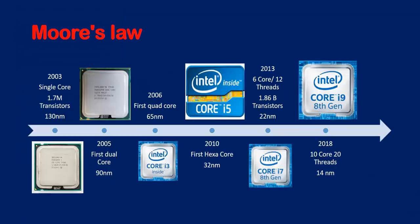If you look at the evolution of processors from 2003 to the current year: in 2003 there was a single-core processor with 1.7 million transistors embedded on a 130 nanometer chip. After two years, in 2005, the first dual-core processor came with a size of 90 nanometers. Then in 2006, the first quad-core processor came — called the i3 processor — at 65 nanometers.